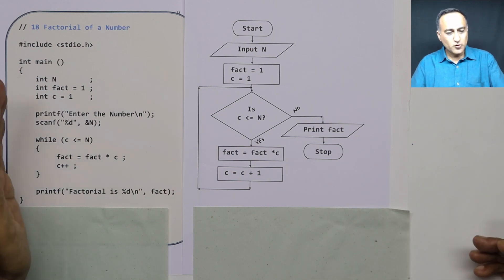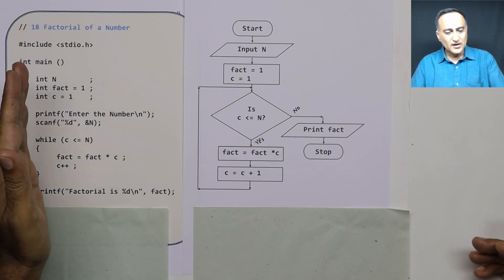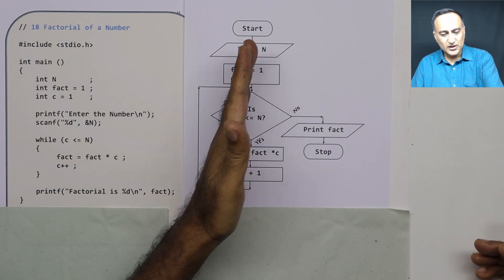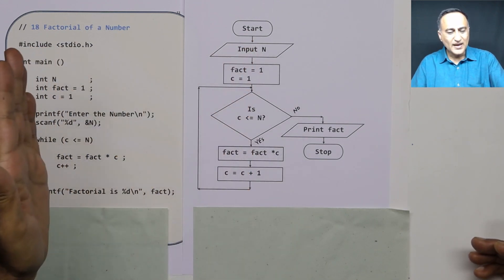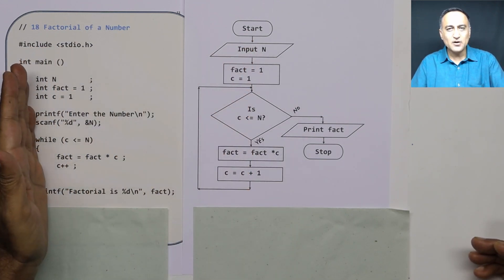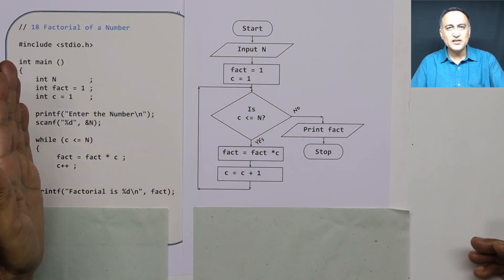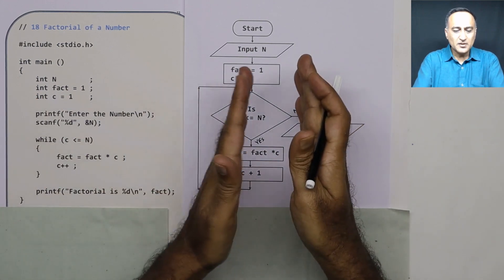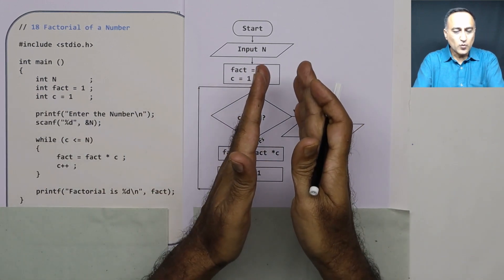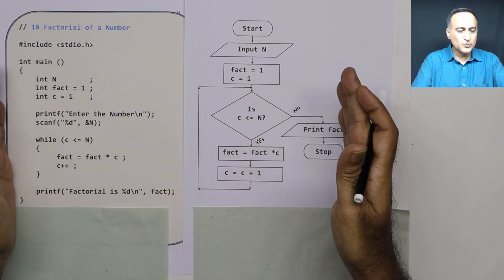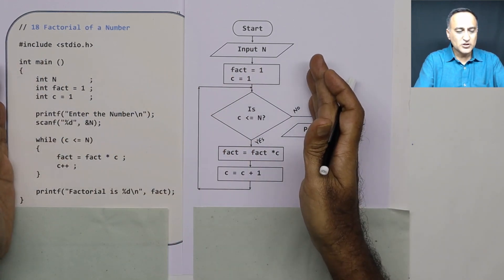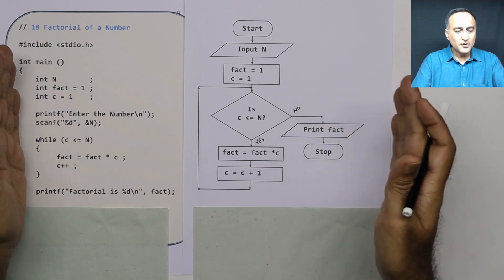This showed you how to convert flowchart logic into exact steps in a C program. Please make it a point to do a one-to-one correspondence between a flowchart and a program.